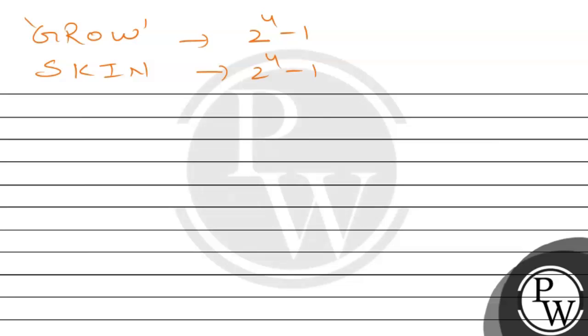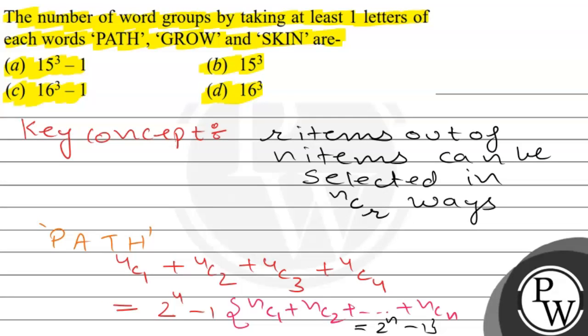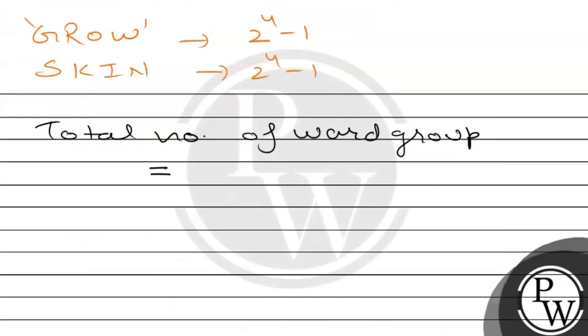So what is the number of word groups? The number of word groups equals the product of selections from each word.